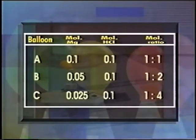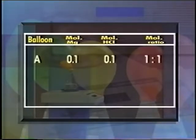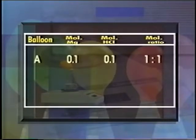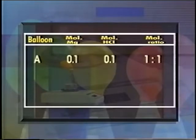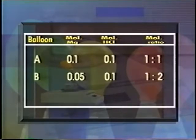This table summarizes the mole ratios of the reactants. In flask A, magnesium and hydrochloric acid have a 1 to 1 mole ratio. In flask B, the ratio is 1 to 2. In flask C, the ratio is 1 to 4.